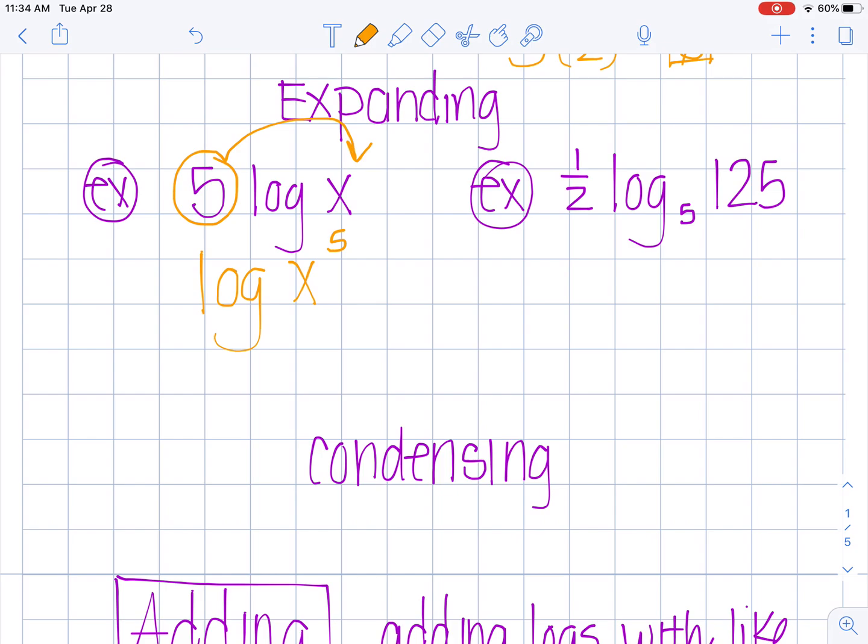The same thing works when you have a different base other than 10 and it also works with fractions. If I have a number out in front here I can raise this up here to this power. So this becomes log base 5 of 125 to the one half power. And if you remember, anything to the one half is the same as the square root. So I would write this final as log base 5 the square root of 125. That is called condensing.